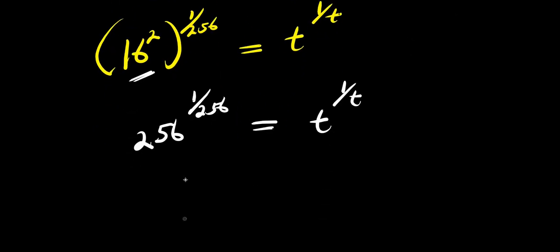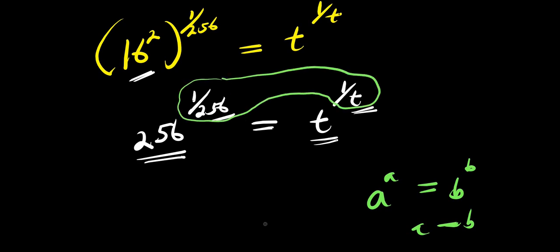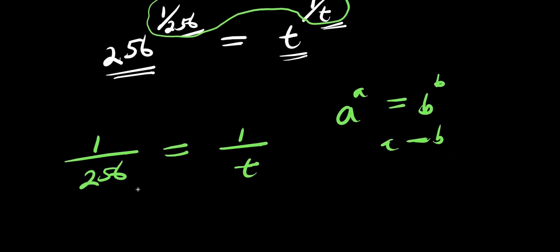Now we have achieved something remarkable here. This is 256 on the base and 256 in the exponent on the left side. On the right side, t is at the base and t is in the denominator of the exponent. This satisfies the condition that if a to the power of a equals b to the power of b, then a equals b. So comparing, we have 1 over 256 equals 1 over t.